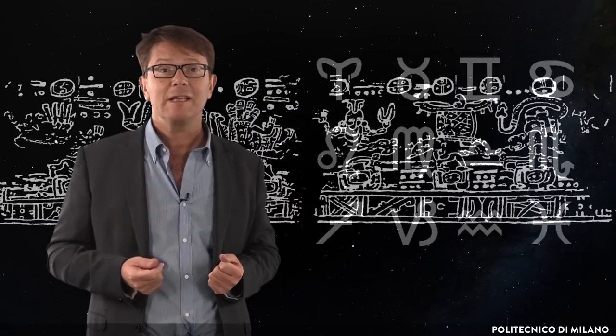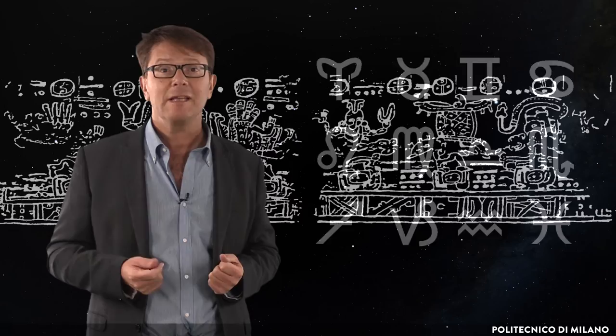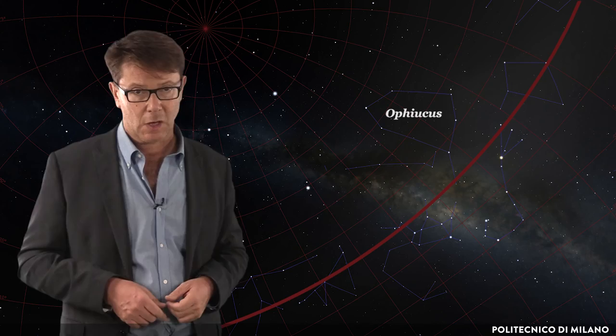But the Maya had 13 zodiacal constellations, as we really should as well, since also our constellation Ophiuchus crosses the ecliptic. The zodiacal constellations were identified in very ancient times, and it is a beautiful thing to use images dating from such far-off antiquity still today.